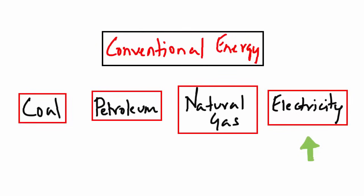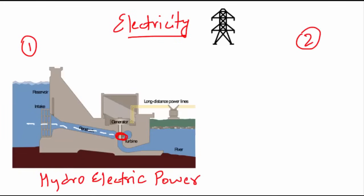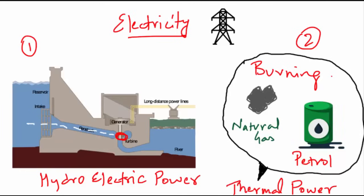The fourth type of conventional energy is electricity. Electricity is generated mainly in two ways. Number one, running water which drives hydro turbines to generate hydroelectricity. And the second way is by burning other fuels such as coal, petroleum, and natural gas to drive turbines to produce thermal power.